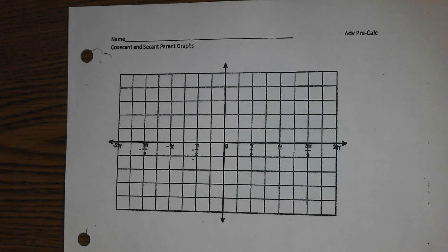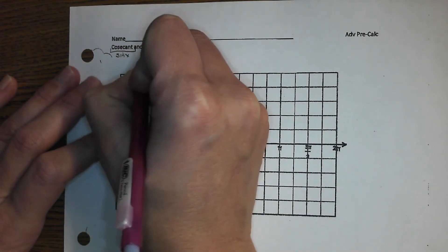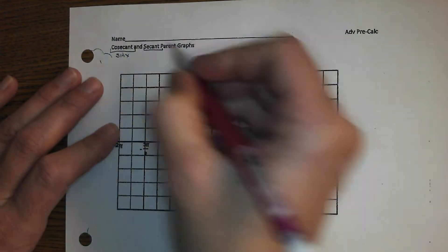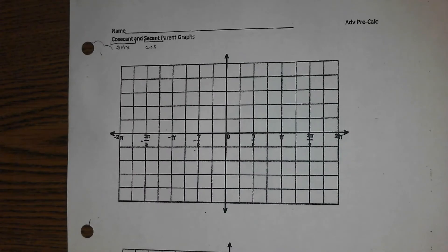Using cosine as a guide. So a cosecant graph is the reciprocal of a sine function, so you would use the sine parent graph as a guide, and for a secant function you would use the cosine parent graph as a guide.